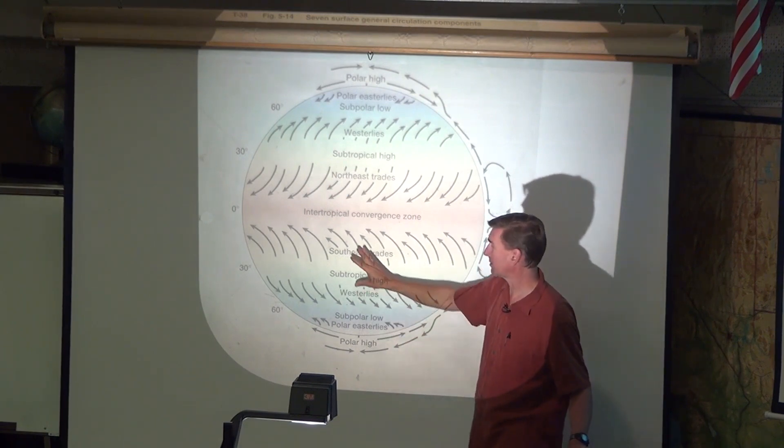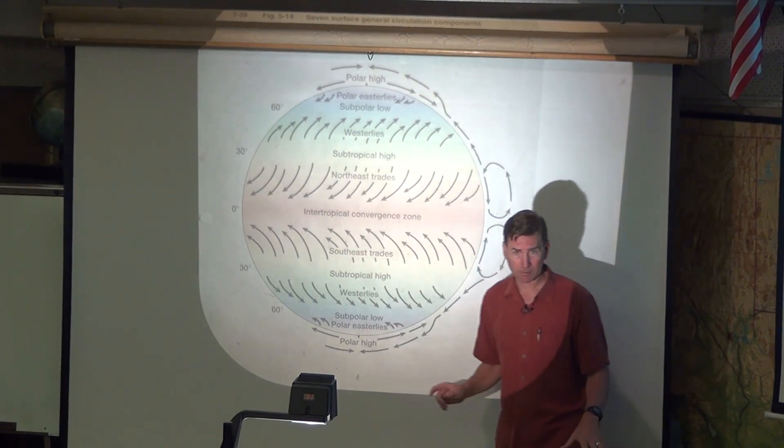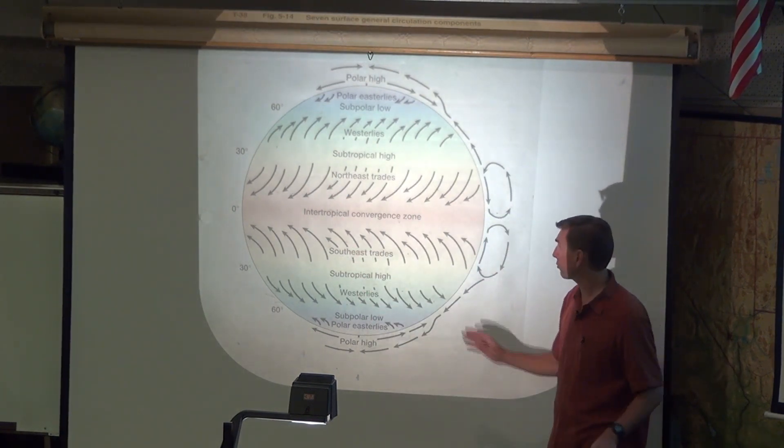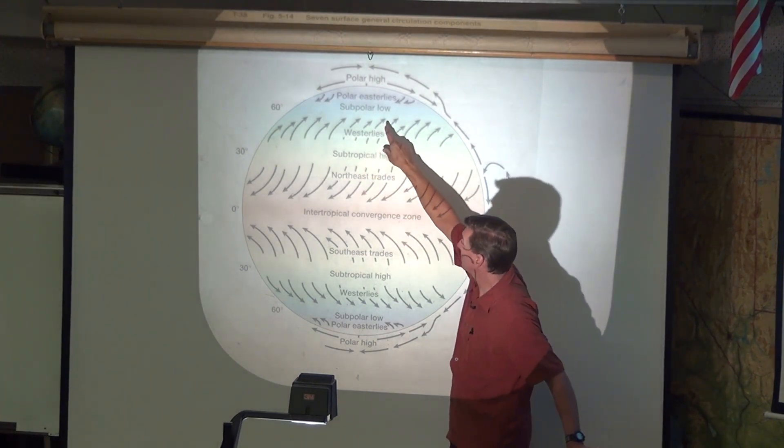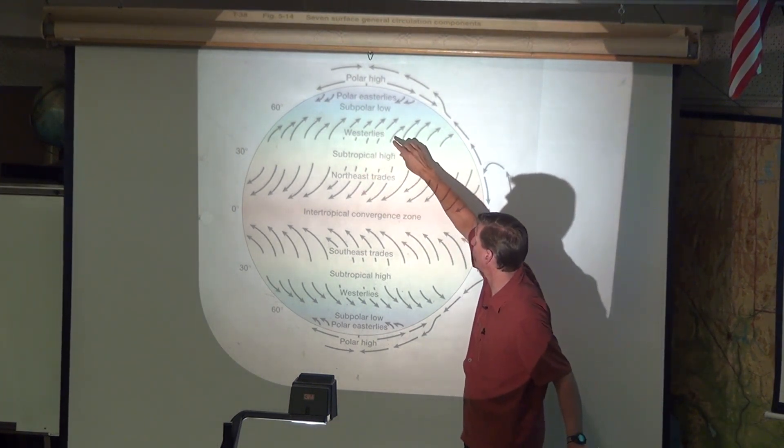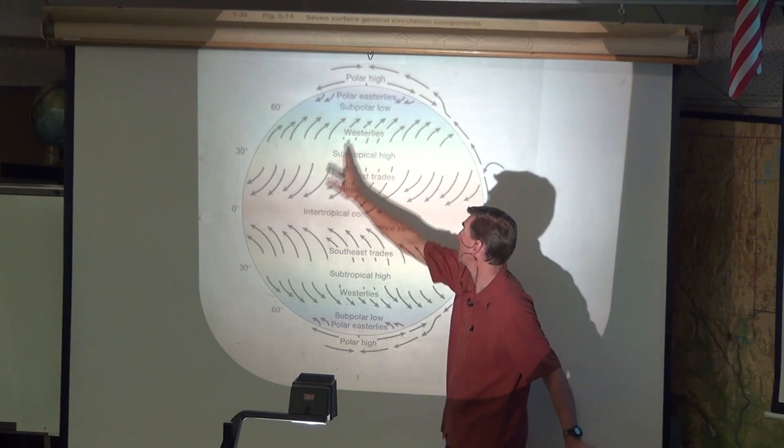Now over here in the southern hemisphere, remember everything's the opposite. Okay, so the Coriolis force is the opposite. And then off the westerlies, we're going to get to this pretty soon. But it's also going from a high to a low. And it's spinning to the right.